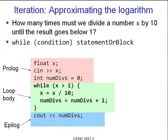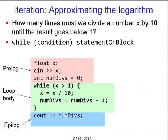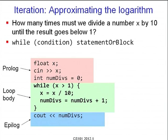Another example: let us try to approximate the logarithm of a number to base 10. One definition of the logarithm, crudely, is how many times must we divide a number x by 10 until the result goes below 1 — that is the integer part of the logarithm, plus or minus 1. The structure is the same: read in the floating point number x, count the number of divisions. Set int numdivs to 0, then while x stays above 1, divide x by 10 and increment numdivs. You can also write 'x /= 10' and '++numdivs', and then print out the number of divisions made.